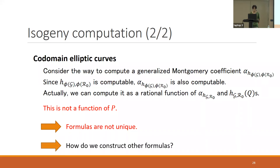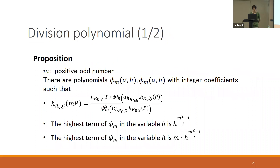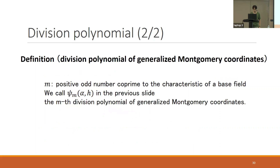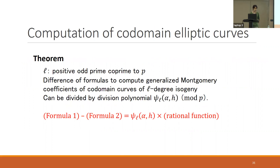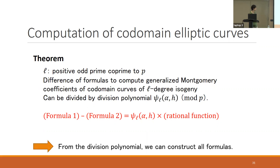How do we construct other formulas? The key is the division polynomial. Here M is a positive integer, and we define a polynomial psi_M of side P and phi(P) with integer coefficients satisfying three properties. We call psi_M the M-th division polynomial of the generalized Montgomery coordinate. By defining this concept, we obtain the following theorem: if there are two different formulas for computing quotient curves, the difference of these formulas can be represented by psi_L times some rational function. So we can theoretically construct any formula using this theorem.